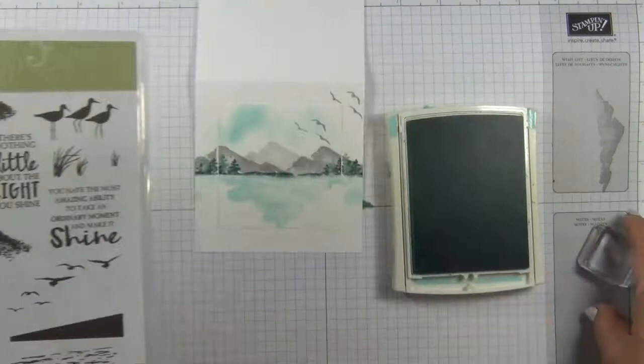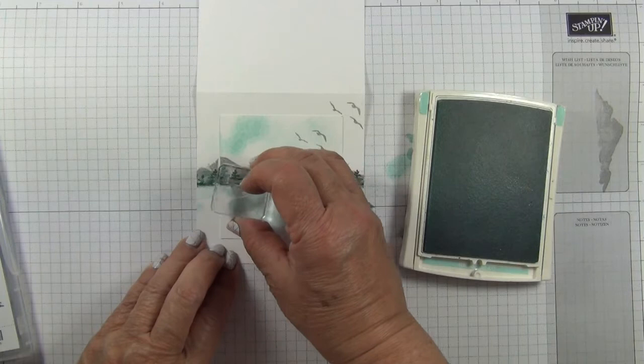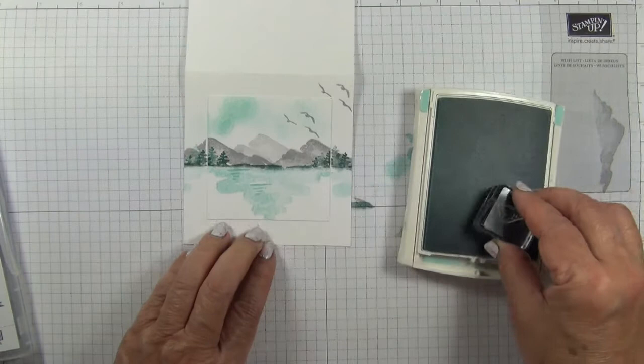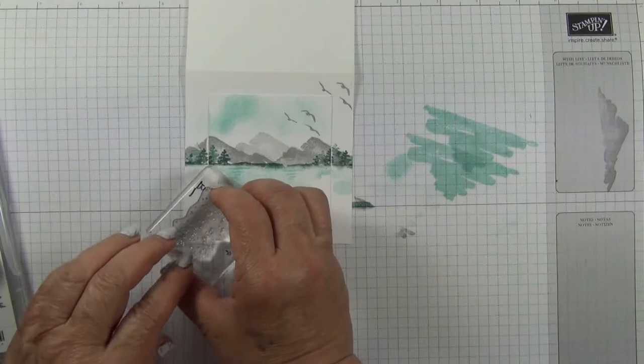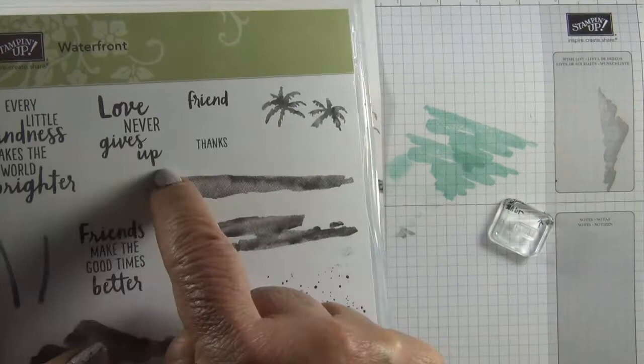I'm going to use this little stamp here to highlight the water and I'm going to just stamp directly. Then use this speckled one to just add a little bit of interest down here.